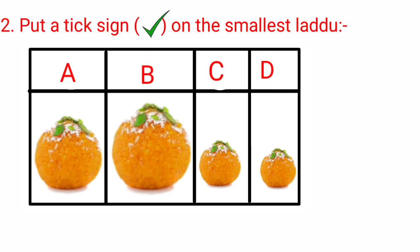Next, question number 2 is: put a tick sign on the smallest ladu. In this question we are given 4 ladus of different sizes. Let's compare the size of these ladus.